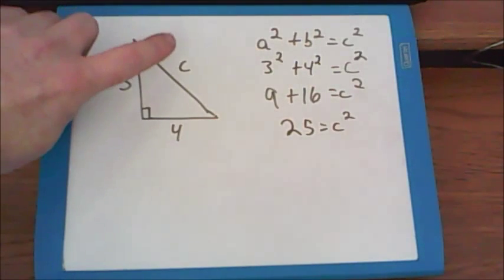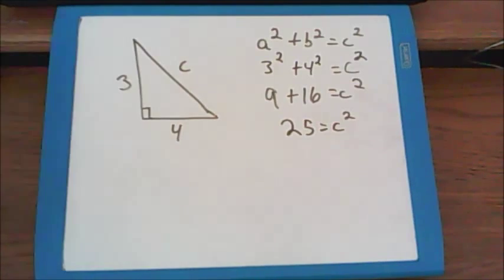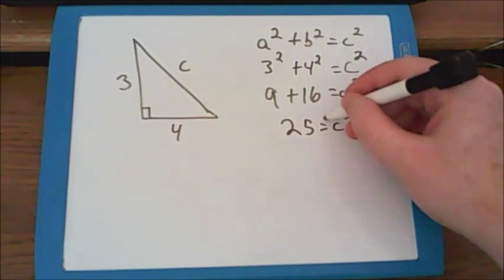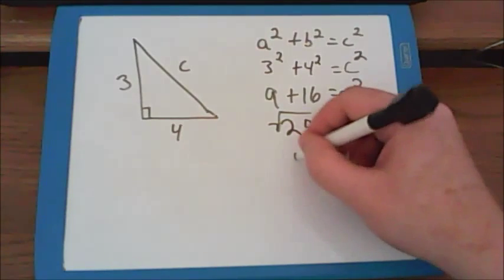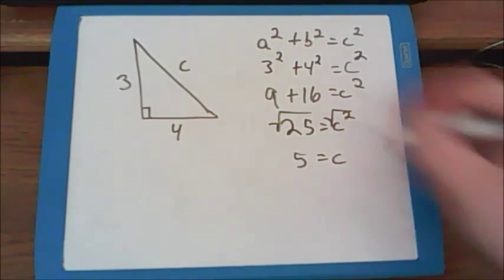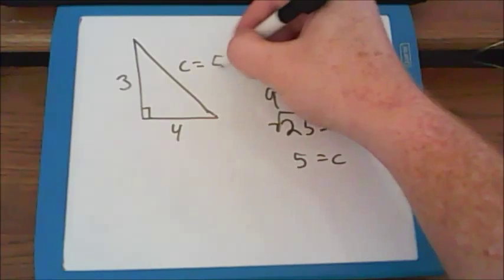But I don't want to know what c squared is, I just want to know what c is worth. So I have to get rid of that square symbol. I do that by taking the square root of both sides of the equal sign. Remember, finding the square root of a number is just finding out what number times itself gets us to the number under the square root sign. So what number times itself gets us to twenty-five? Well that's five of course. So five equals c. Our missing side is worth five units.